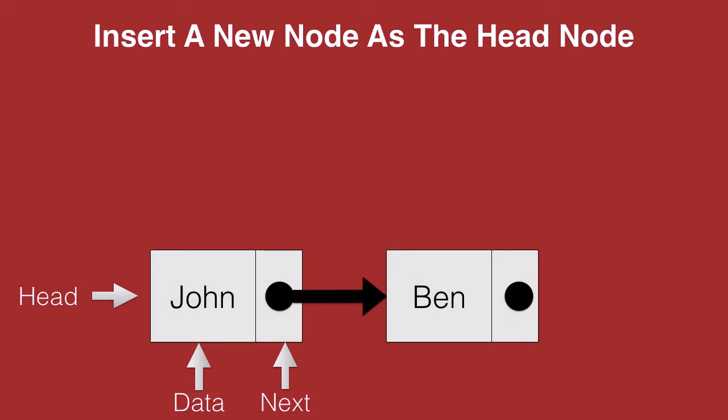Let's take an example of a linked list with two nodes. The first node has the data John and the second node has the data Ben. John is our head node.